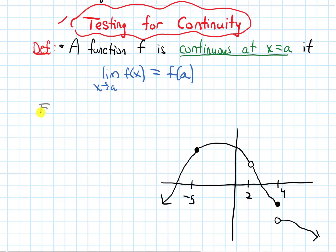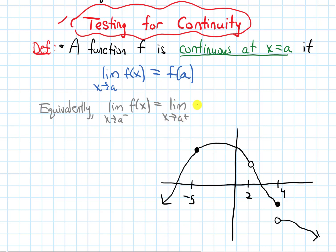Equivalently, for this to be the case, I can break it down in terms of one-sided limits. I would need the limit as x approaches a from the left of my function to equal the limit as x approaches a from the right of my function. Those being equal would guarantee that this limit exists. And I need both of these to equal f of a, the y value of my function when I plug in x equals a.